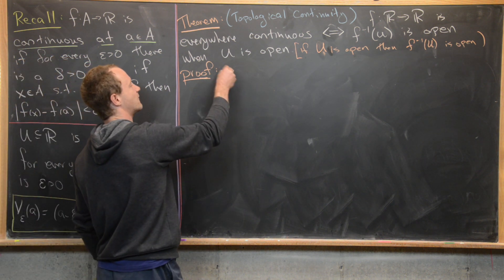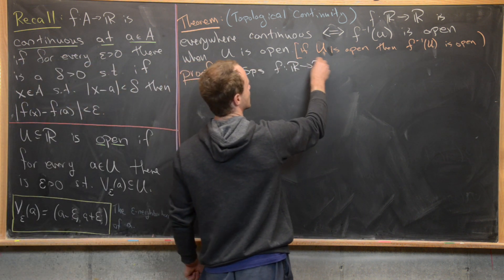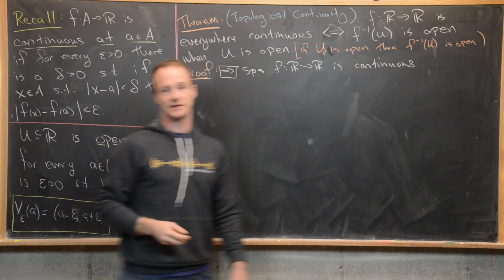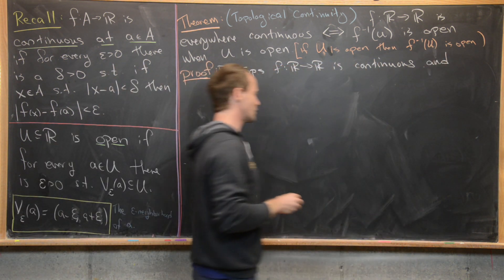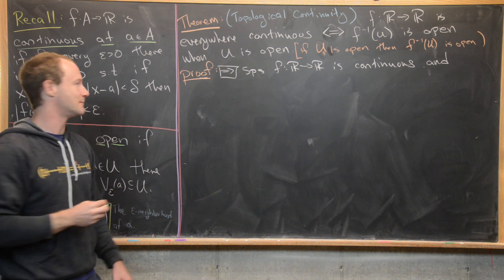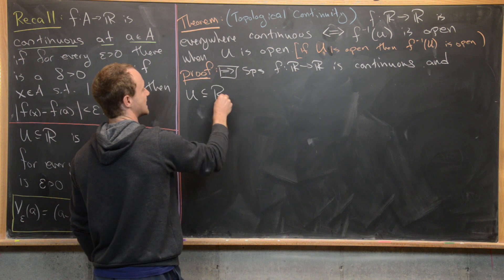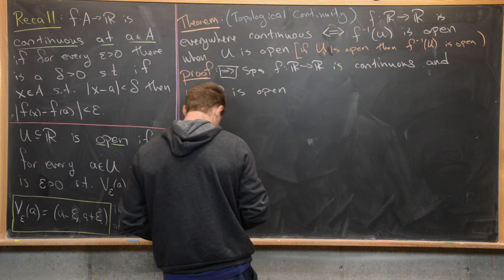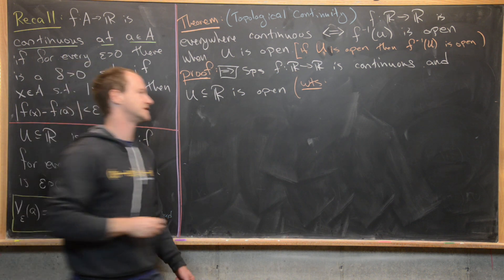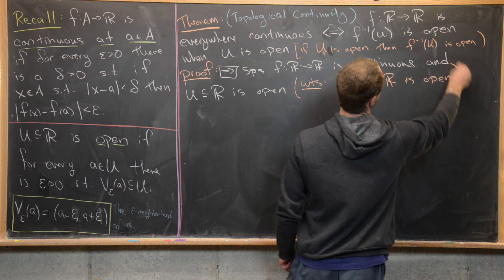Let's get going with the proof in the forward direction first. We want to suppose that f from ℝ to ℝ is continuous — everywhere continuous — and we also suppose that U is an open set of ℝ. What we want to show, to finish the forward direction of this proof, is that f inverse of U is an open subset of the real numbers.